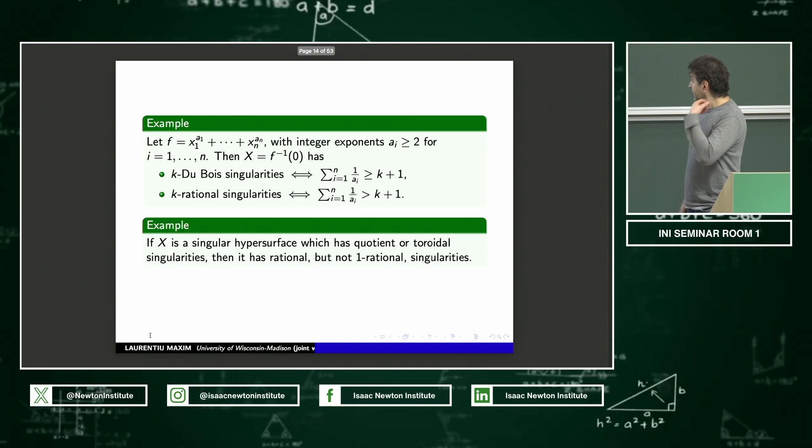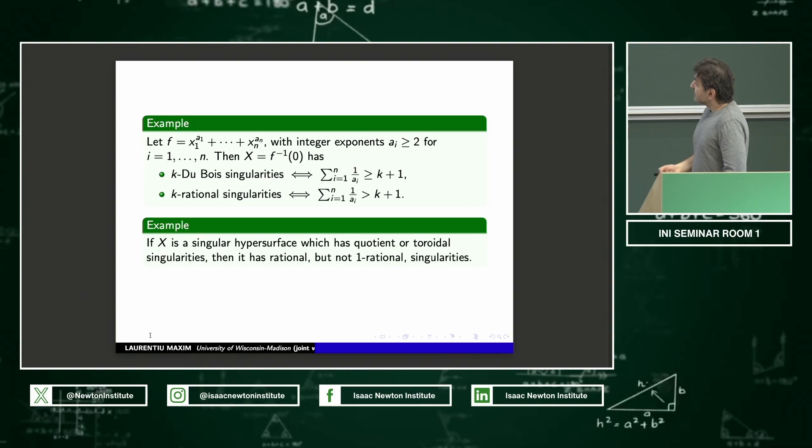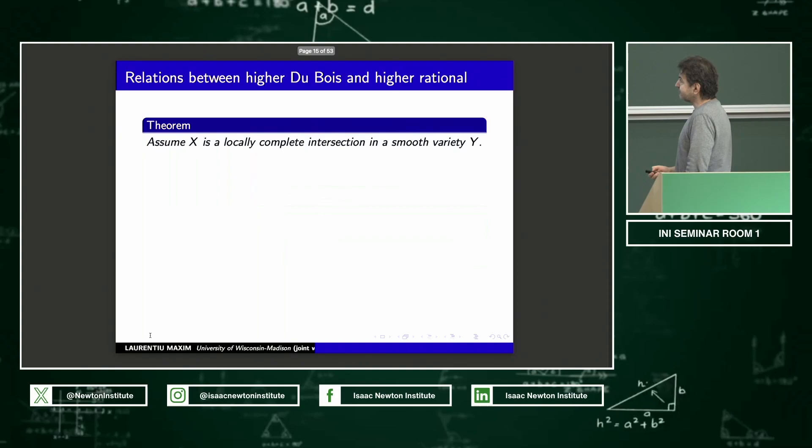This is just one example to keep in mind. Of course, you can make up any example you want of any level of K Du Bois or K rationality. Now, another example that's quite common is quotient or toroidal singularities. If I work with hypersurfaces such singularities, then it's known that it's rational, but they are not one rational, for example. So typically the higher you go in the level of rationality or Du Bois, the weaker the singularity is. And once you go past the dimension, at least for the local complete intersection situation, once you go past half of the dimension of the variety, you get smoothness.